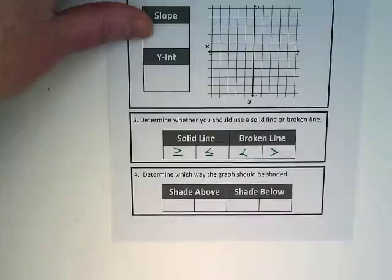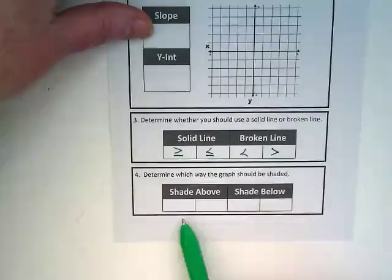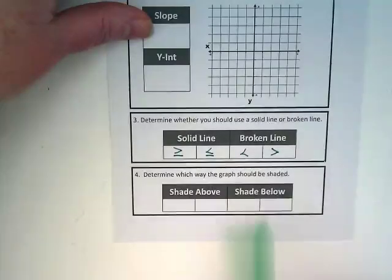And just like on a number line, once we have our open or closed circle, with a number line, we draw a line to the right or to the left. Correct? I want you to think about that with shading. We'll be shading above or shading below.